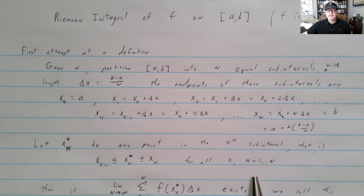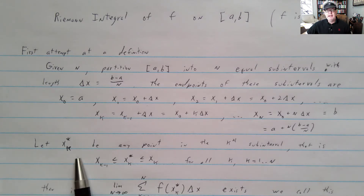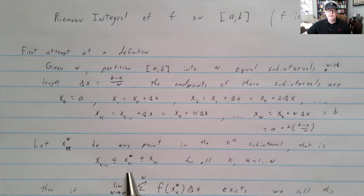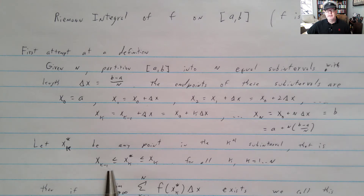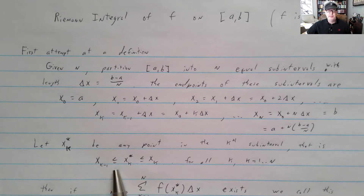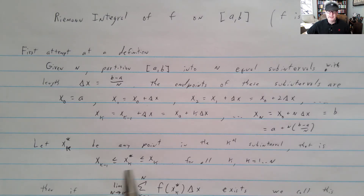We're going to pick any point in each subinterval and call it x_k*, where the k-th subinterval goes from x_{k−1} to x_k, for k = 1 to n. You can pick any point — the left endpoint, the right endpoint, the midpoint, or any point in between.